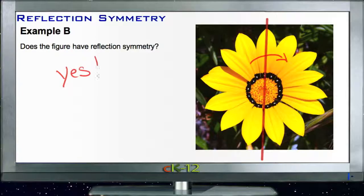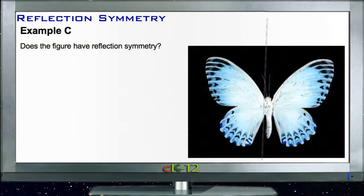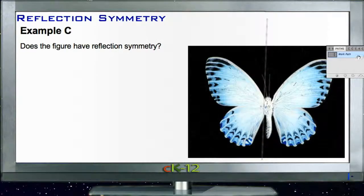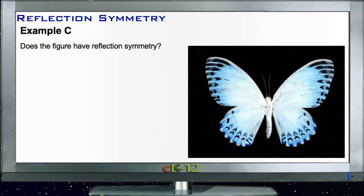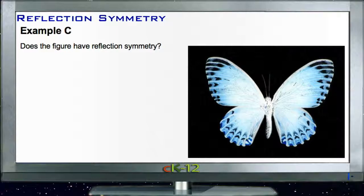Okay, Example C. All right, reflection or Example C says: does this figure have reflection symmetry? This one's very similar to the last one in that, you know, it's not exact, but because the butterfly does have the same wing pattern on the left and on the right...